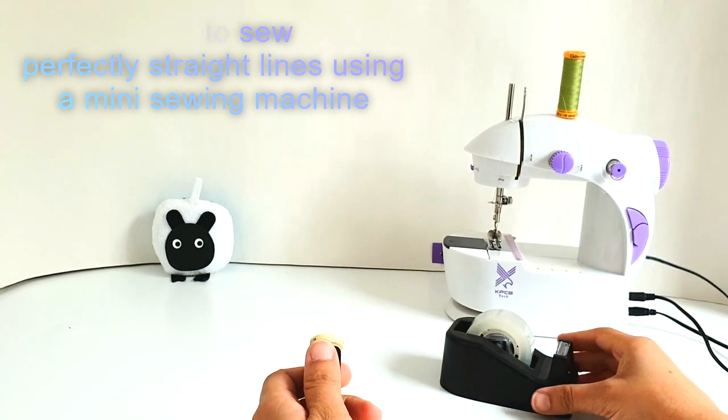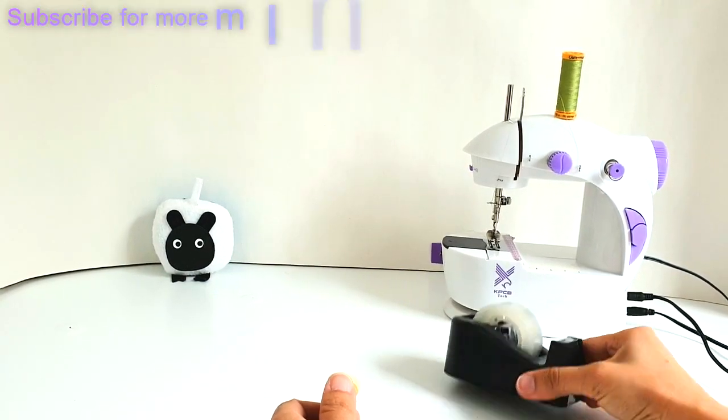To sew perfectly straight lines with your mini sewing machine, you will need some sticky tape and a really long piece of string.